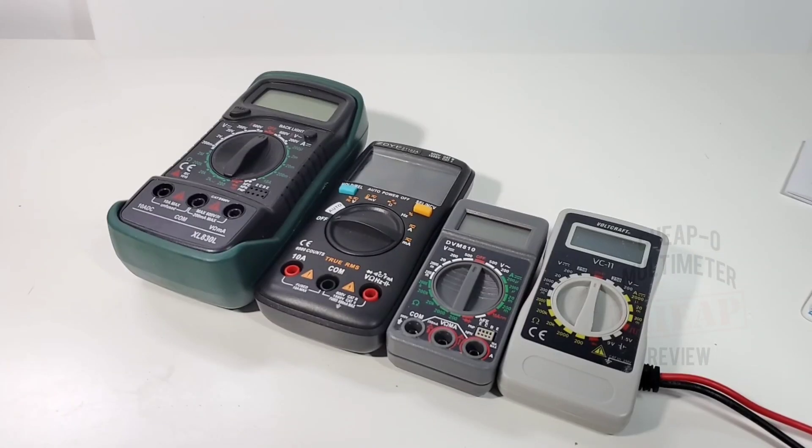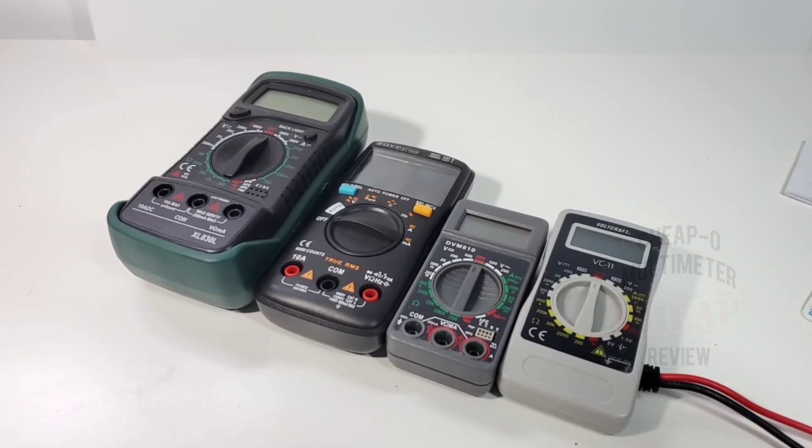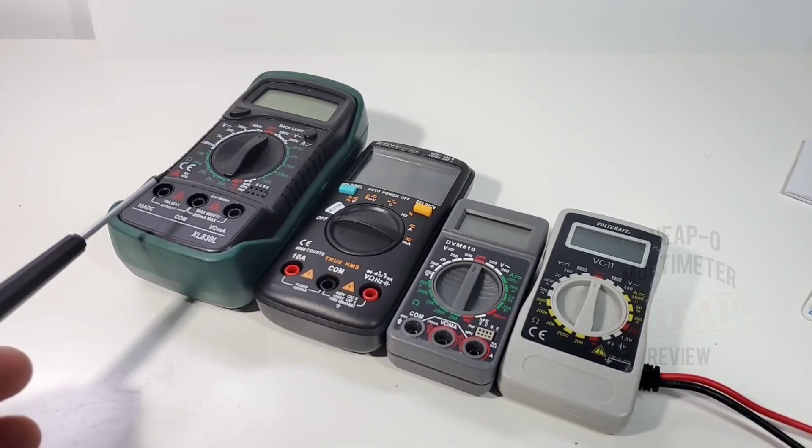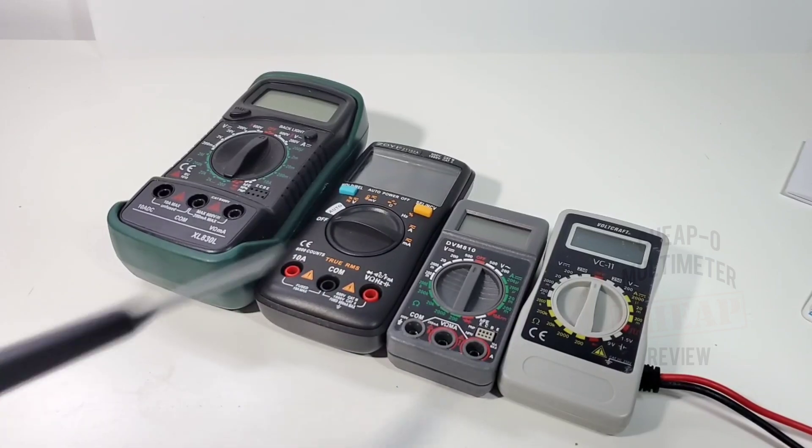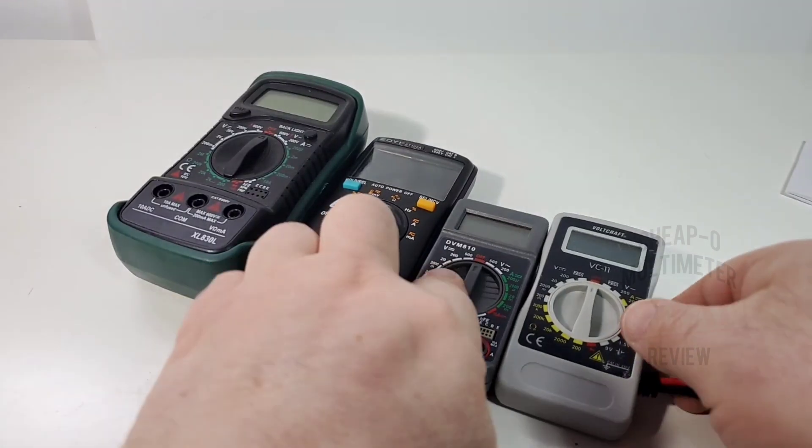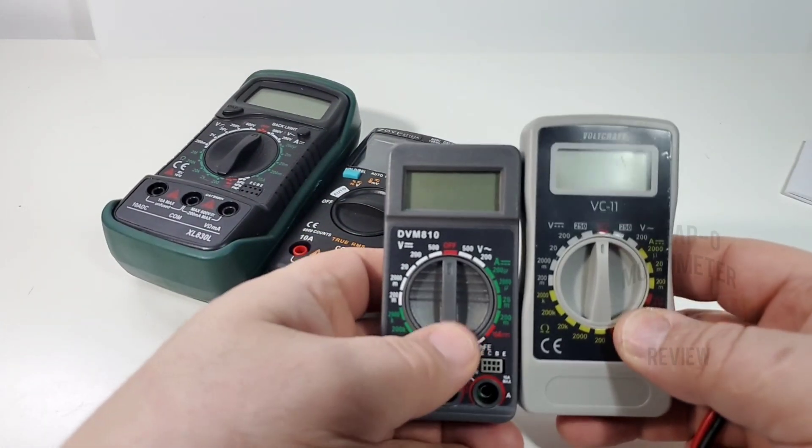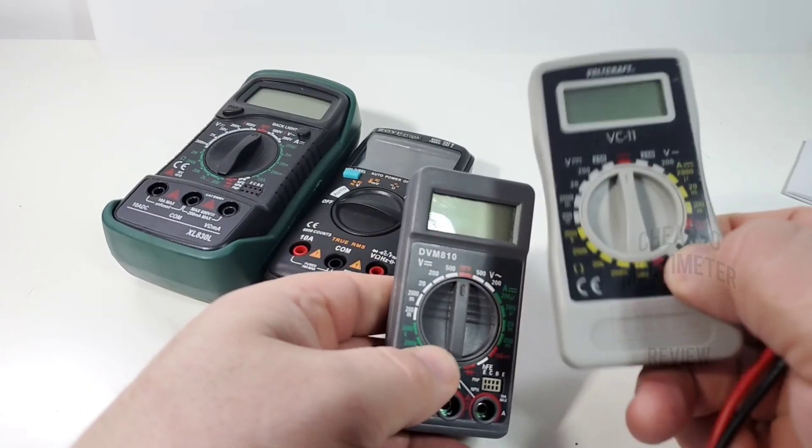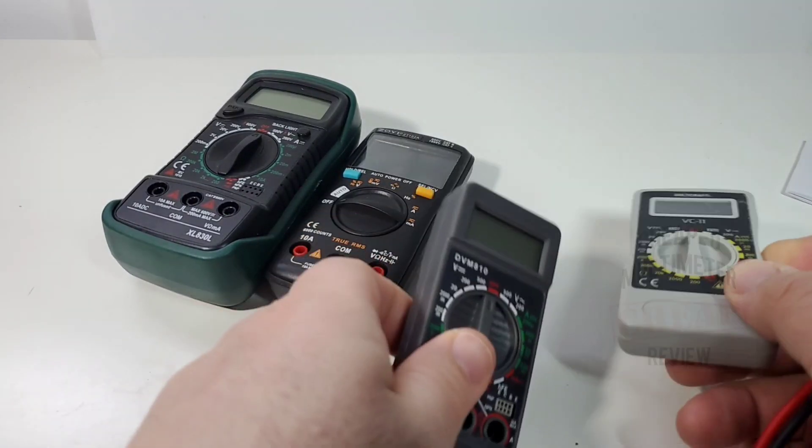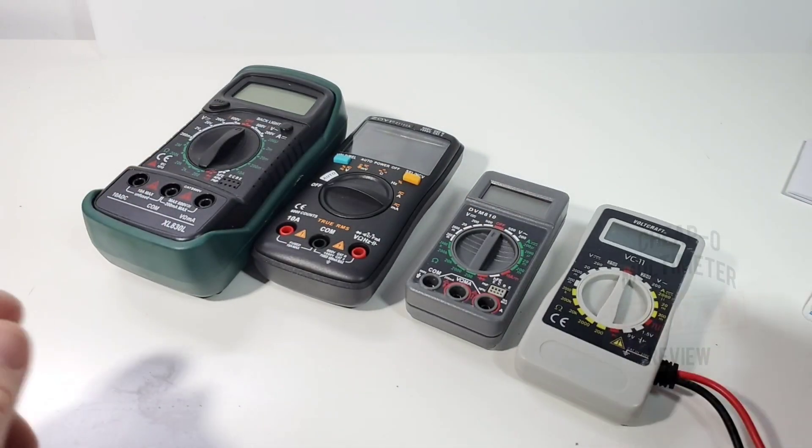Here are some pretty small multimeters: the Mastech XL830L, the Zoyi ZT102A, and the Volcraft VC11. All small in size from small to smallest. But you can see even compared to that VC11, the VC11 makes this thing look even smaller. It is crazy tiny.